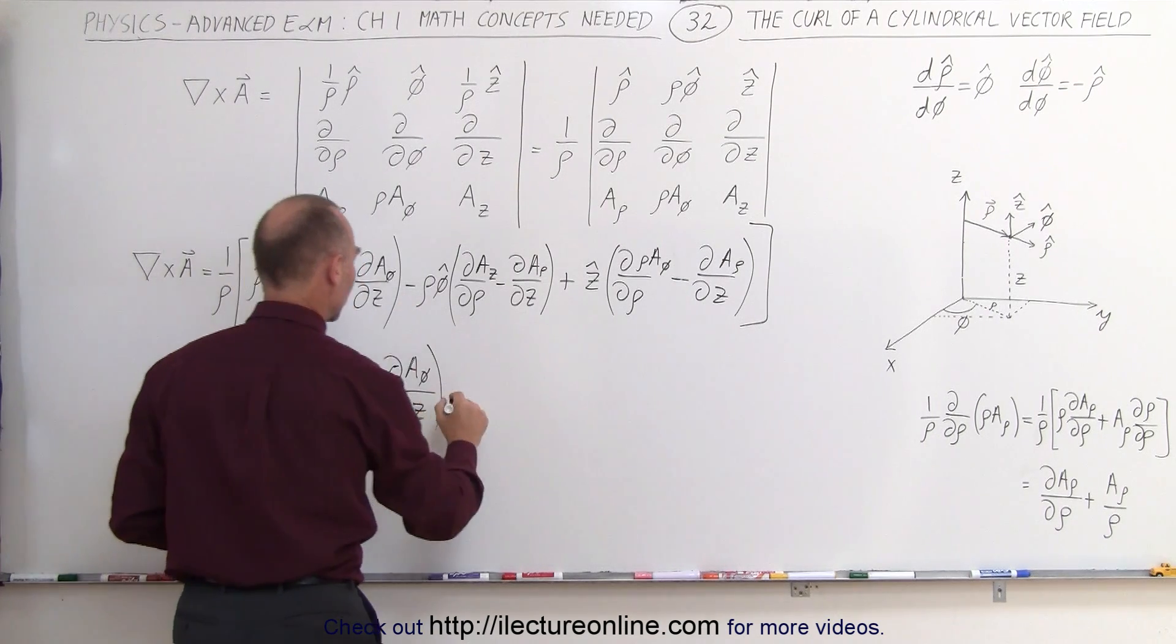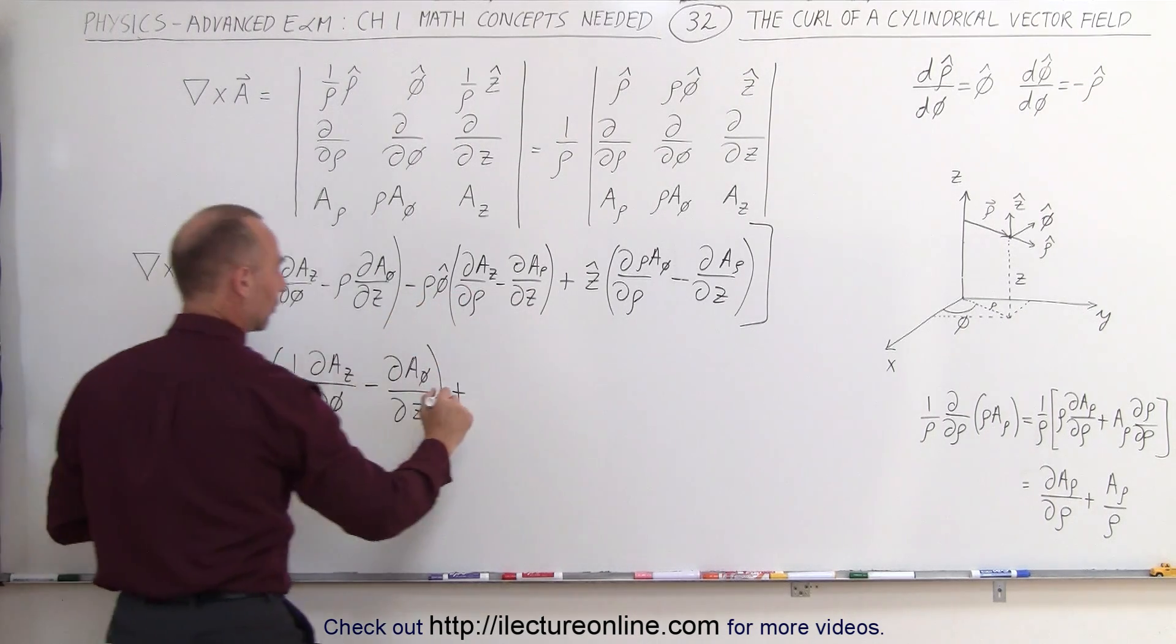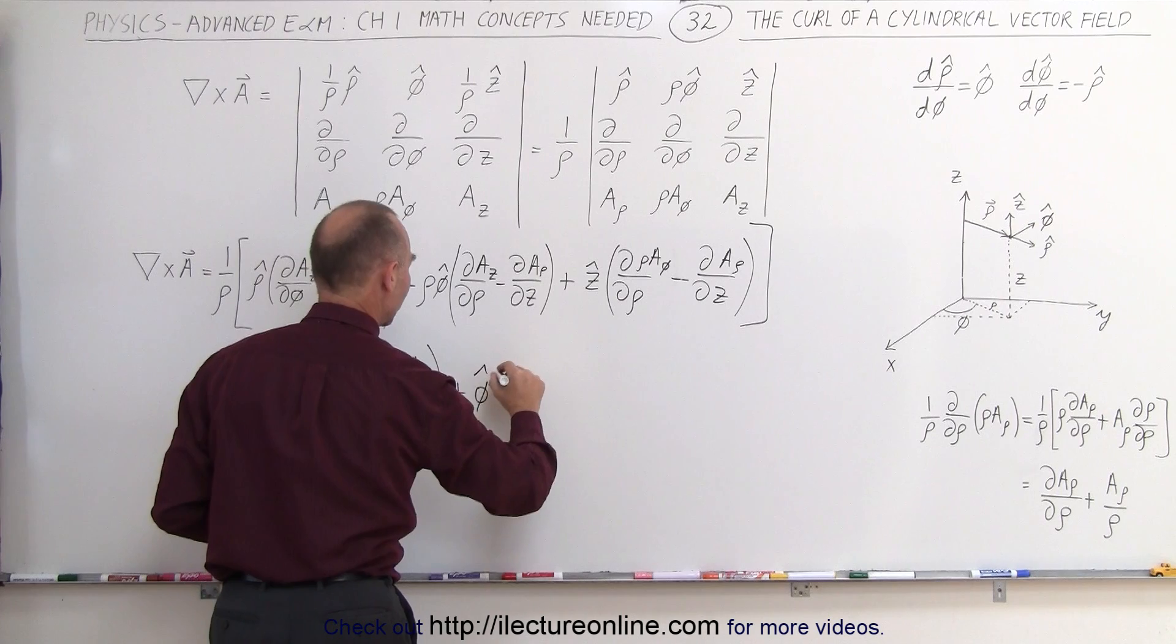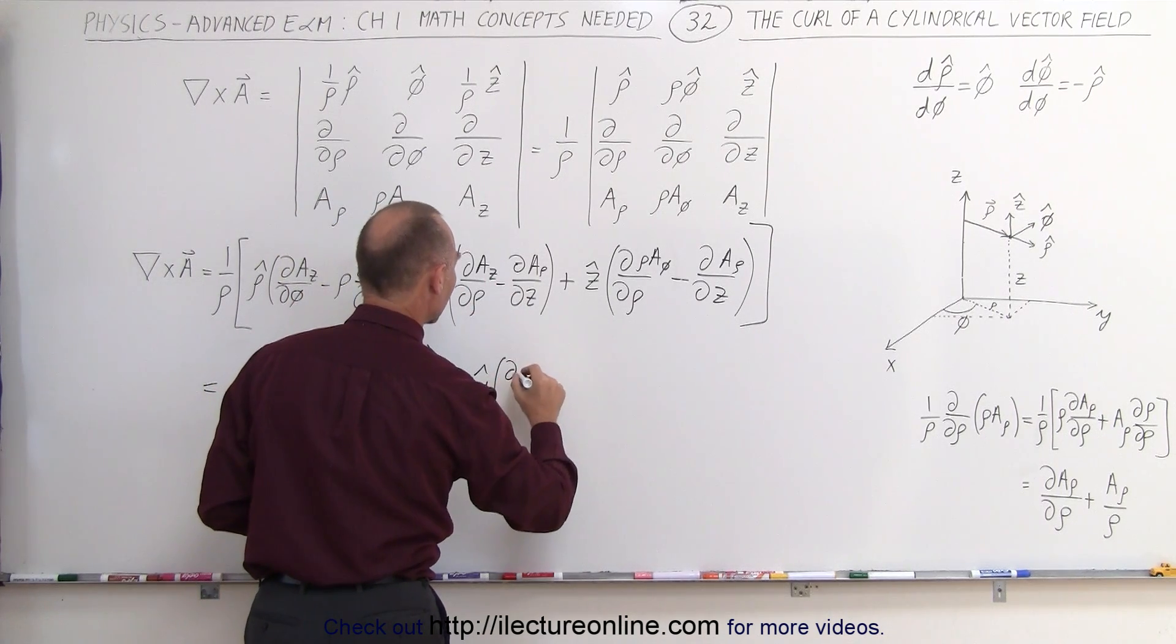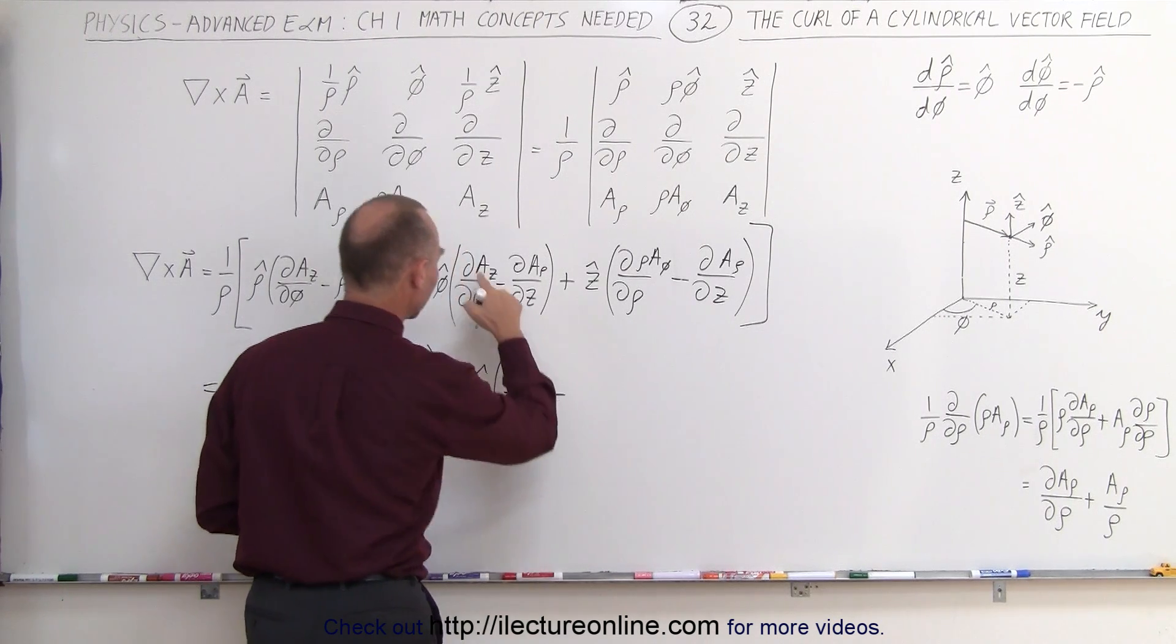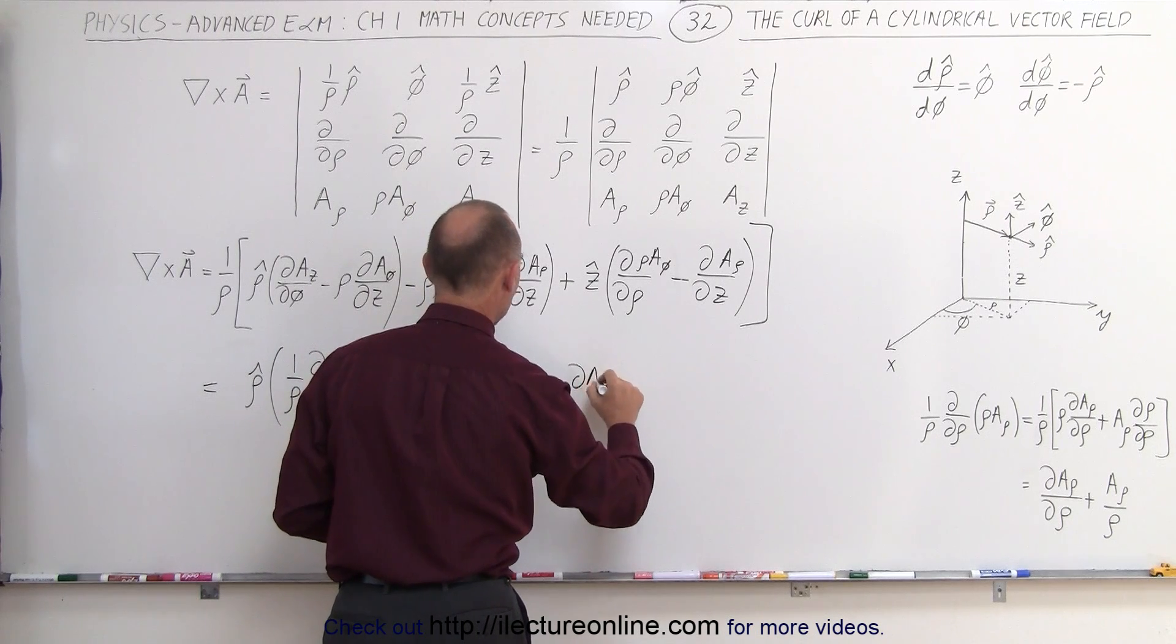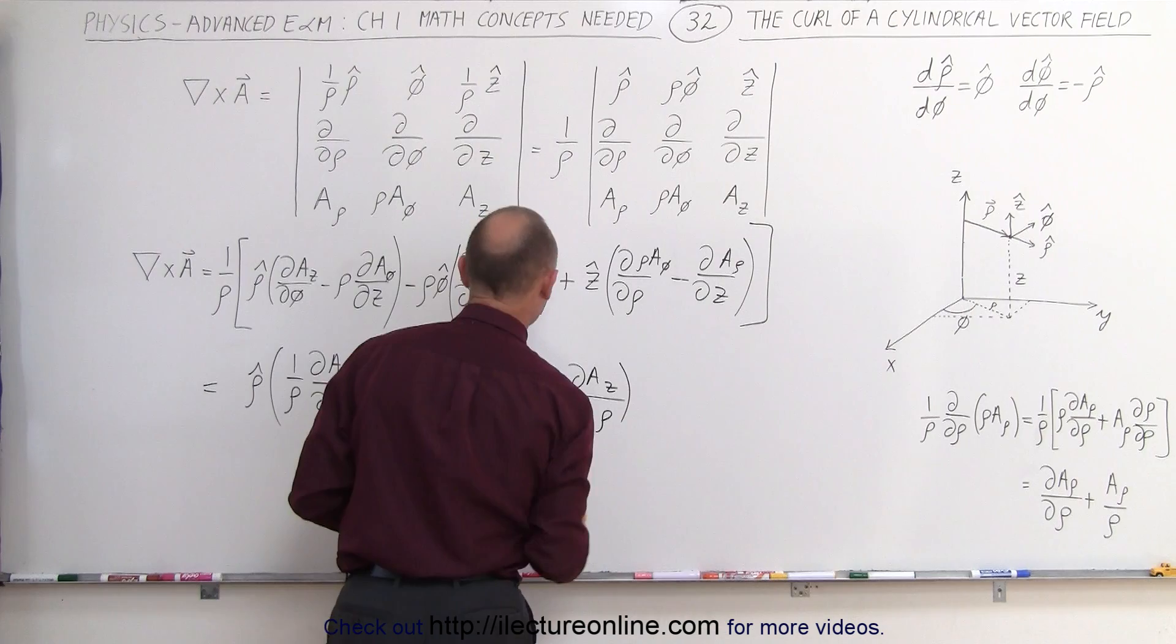Here, we're going to make that into a plus. Now, the 1 over row here will cancel out with the row there, and we're left with phi unit vector times, and switch these around because we want to change the negative sign to a positive, so the partial of the row component with respect to z, minus the partial of the z component with respect to row.